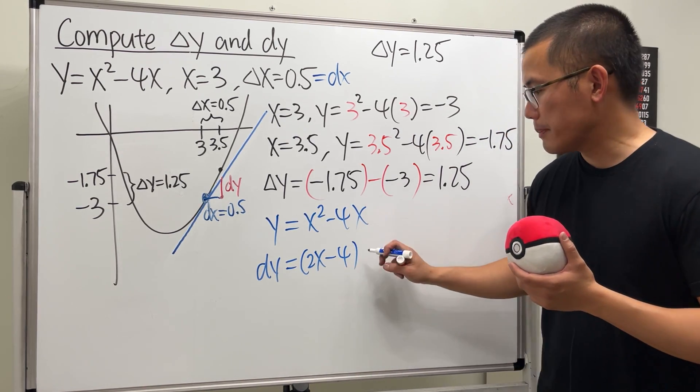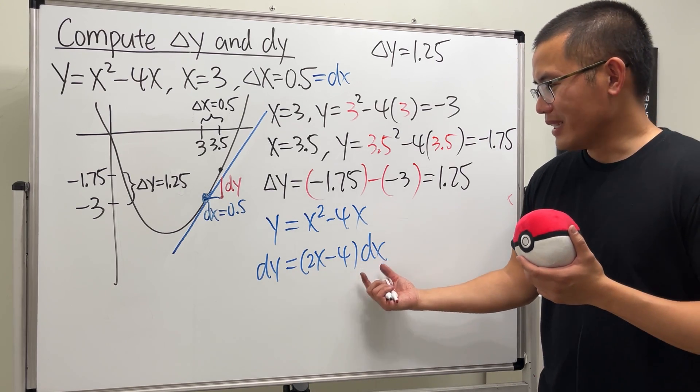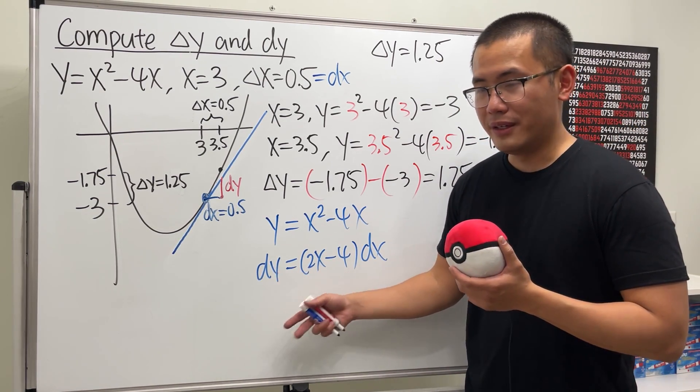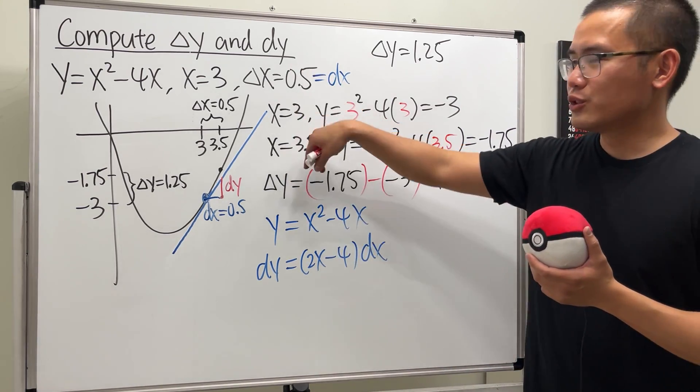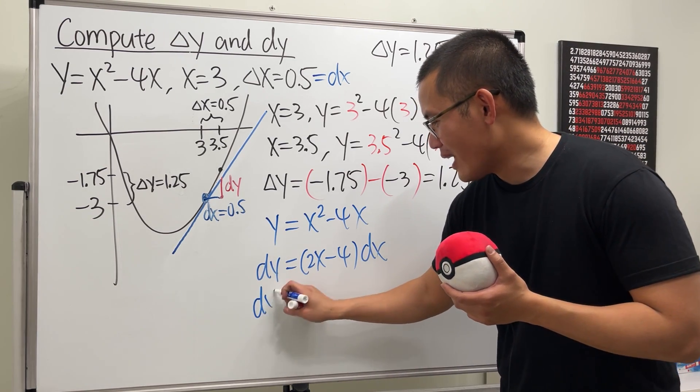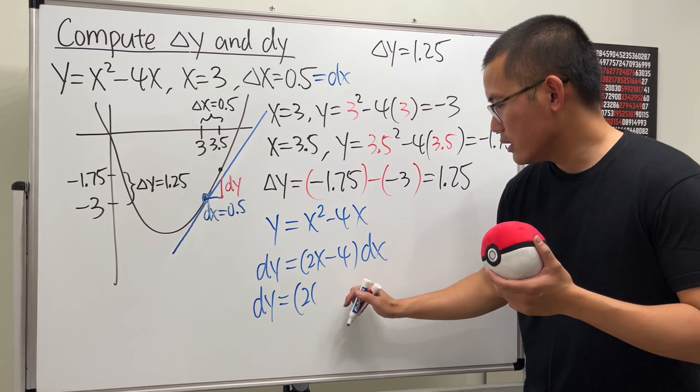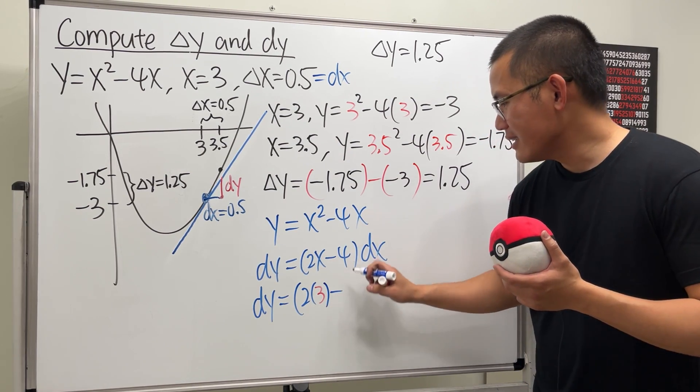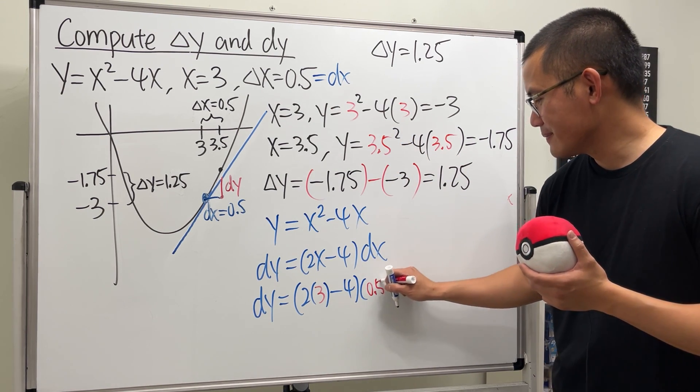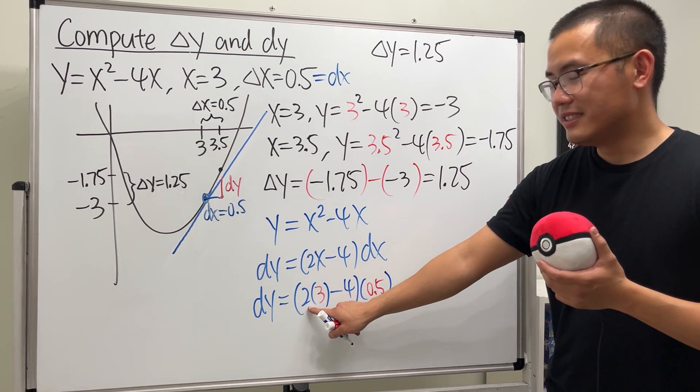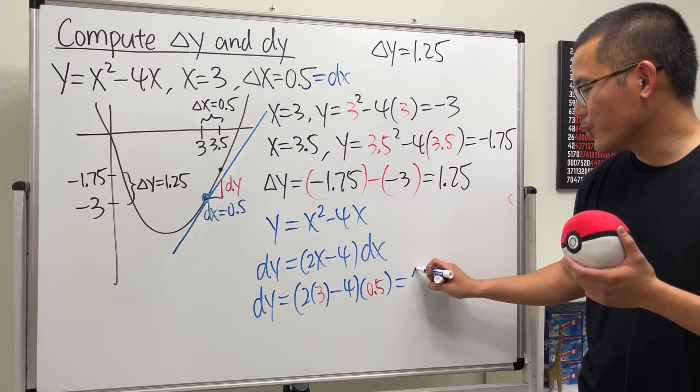Now this is how we are going to compute dy. Here, this is our y, which is x squared minus 4x. All we have to do is differentiate this and we will get dy. We will get 2x minus 4, and then right here we multiply by dx. That's it. Now we can just plug in every number. dy equals 2 times x, which is 3, and then minus 4, and then times dx, which is 0.5.